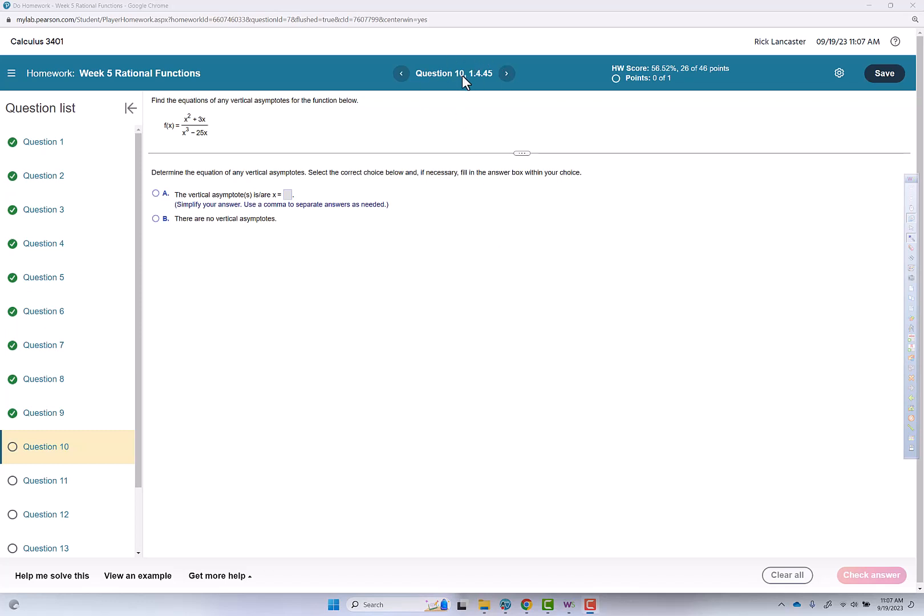This video goes over question 10 of the rational functions assignment. Find the equations of any vertical asymptotes for the function below. So f of x equals x squared plus 3x over x cubed minus 25x.